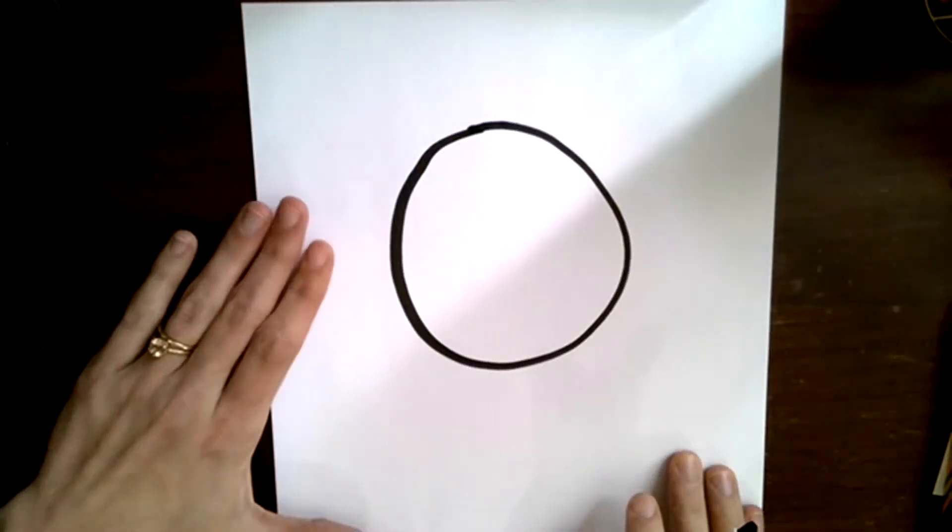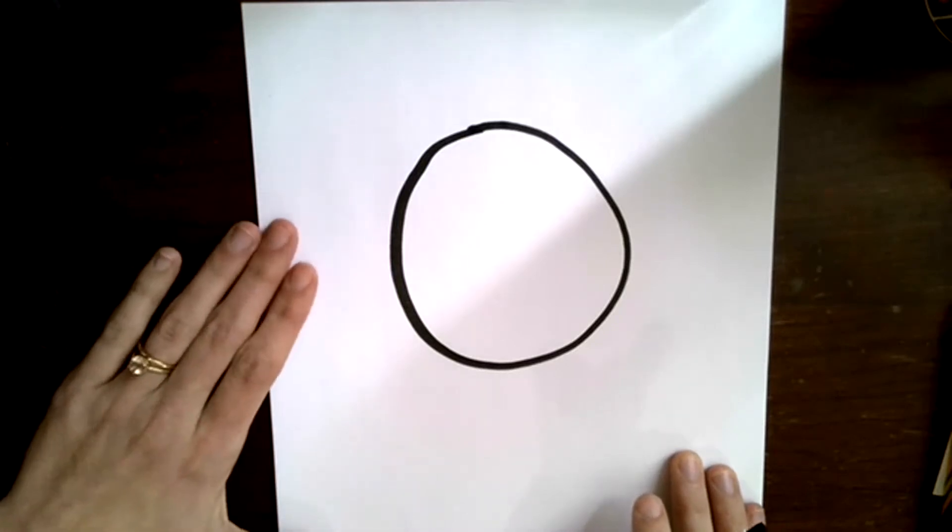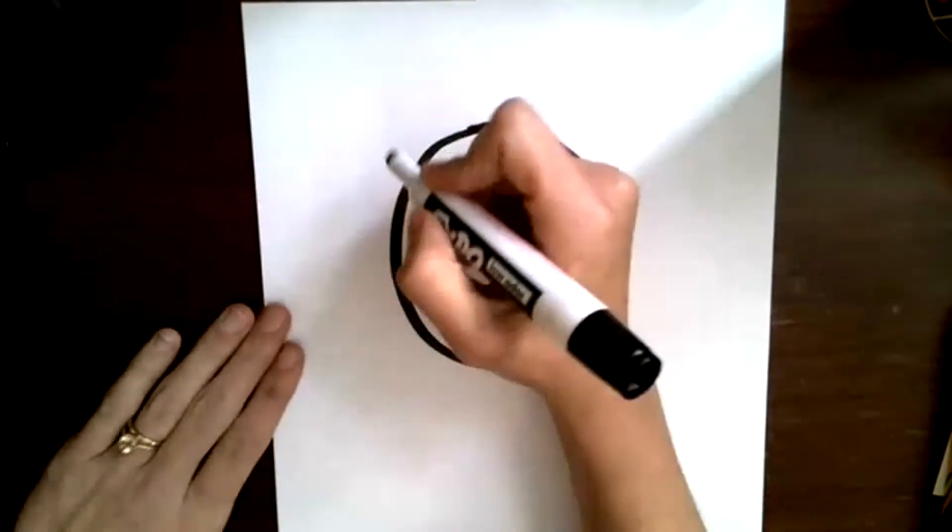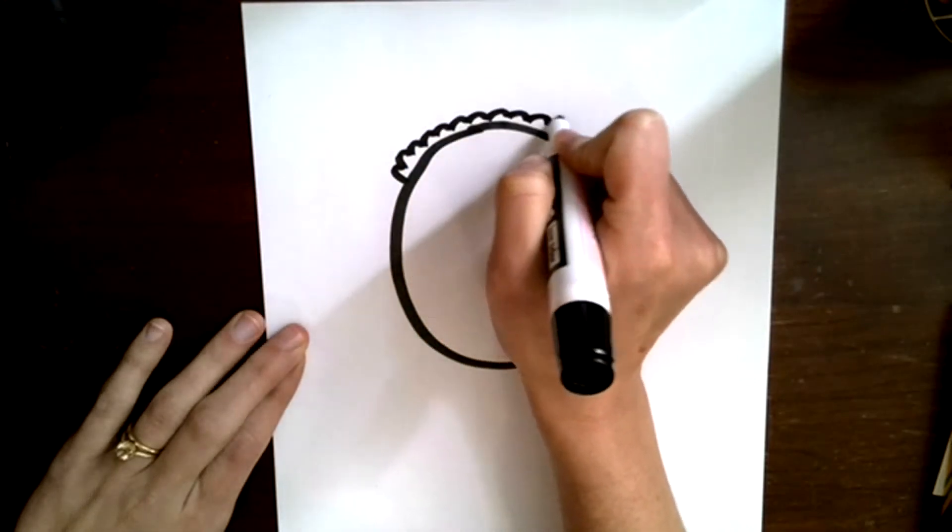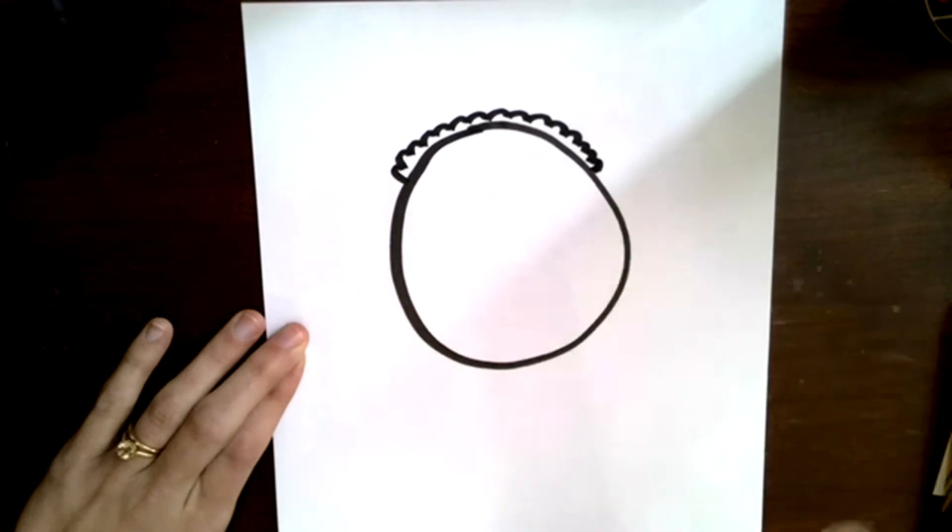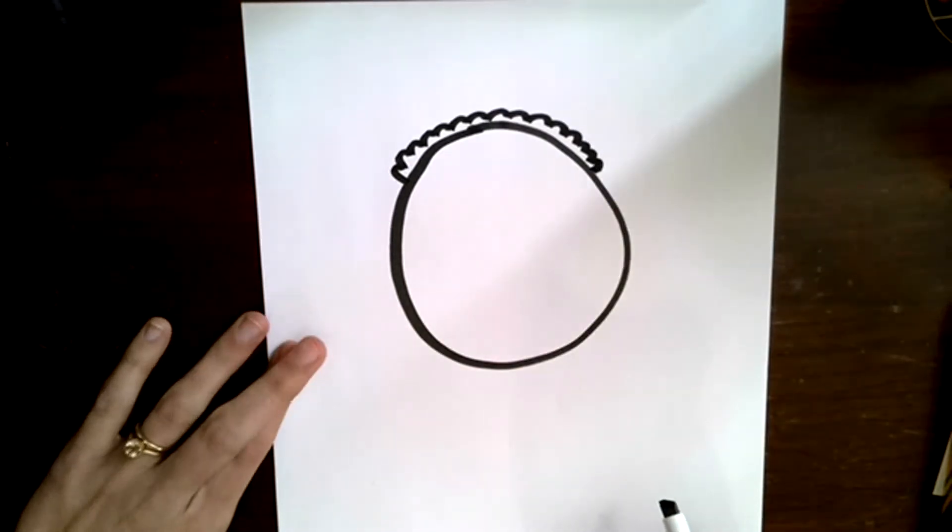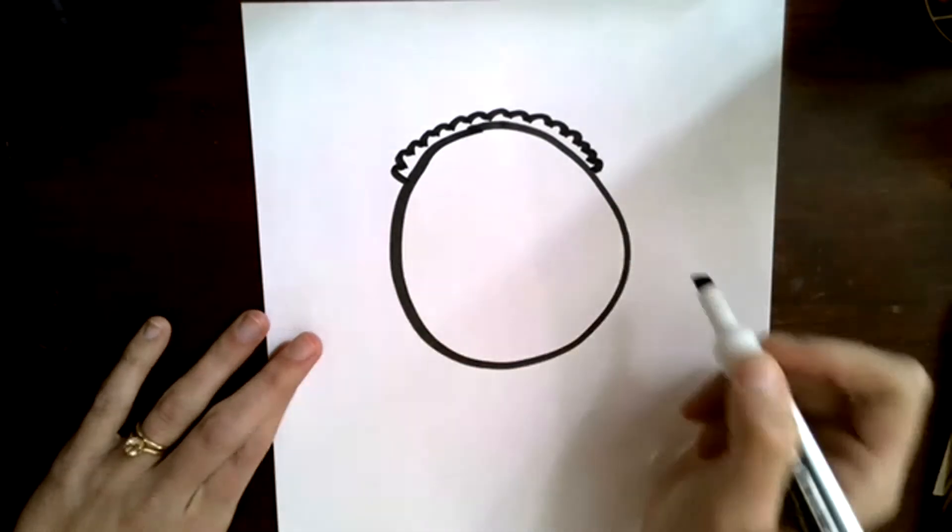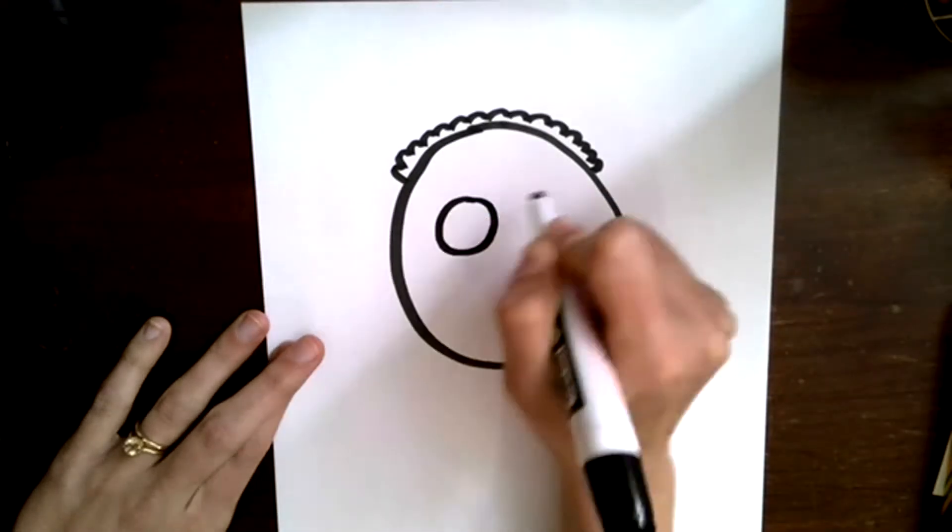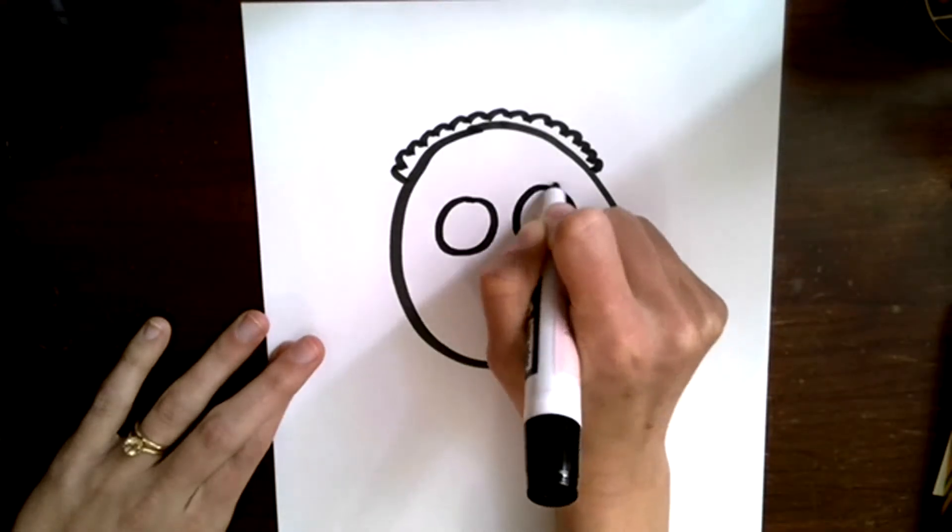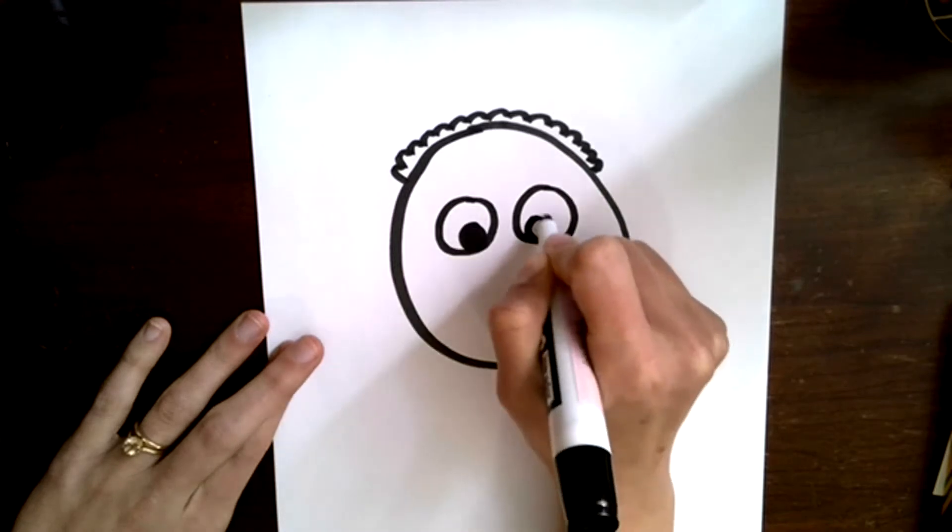The next thing you're going to do is give him some hair by drawing little curves, little bumps, nice short hair like that. We're going to give Martin Luther King Jr. some eyes, so you can draw some circles in the middle here and then two more circles, and you can go ahead and color those in if you'd like.